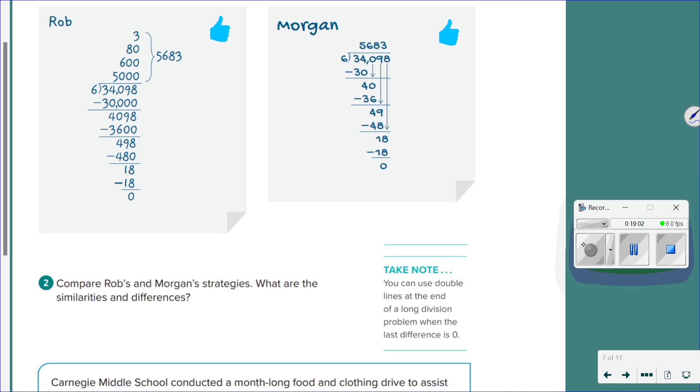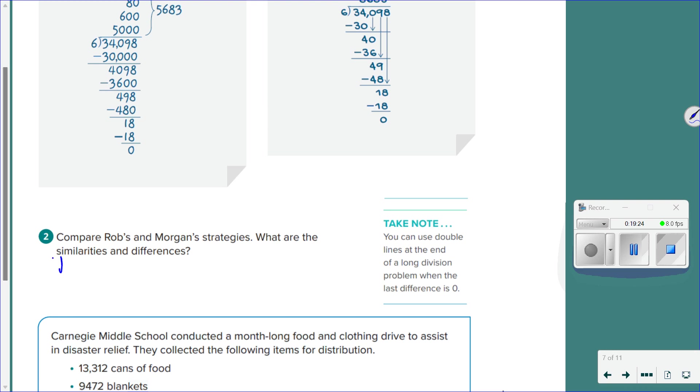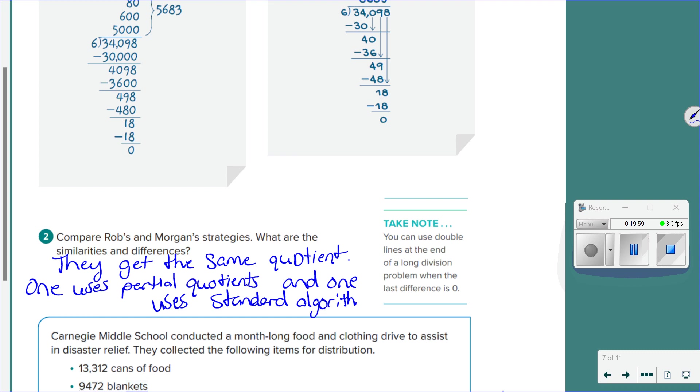Who can tell me how Rob and Morgan's problems are similar? They're similar because they kind of use like the same like that kind of like format thing where like it's kind of like the same format. but it's not. So what is similar? They get the same quotient. Yes? And they are different because one uses partial quotients and one uses standard algorithm. Does everybody agree? Yes.